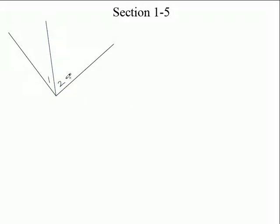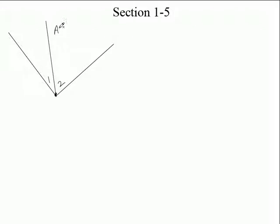Let's say this is angle one and this one right here is angle two. Look at these two angles — they're next to each other. Angle one and angle two are right next to each other. Both angles share something: they share a vertex — they have a common vertex — and they also share a side. Instead of saying 'angles that are next to each other,' we use the word adjacent.